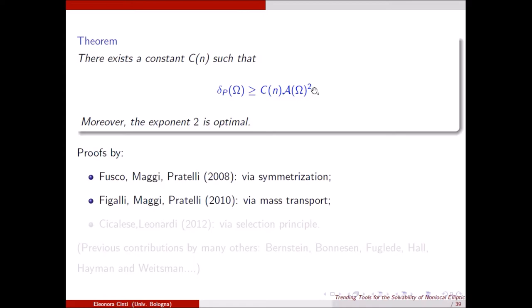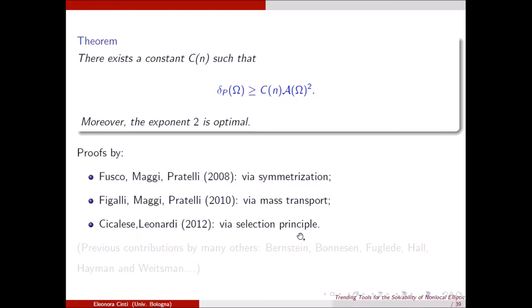Later, Figalli, Maggi, and Pratelli gave an alternative proof using mass transport. In their paper they considered a more general situation with anisotropic perimeter, and since symmetrization techniques are not well-suited to that setting, mass transport theory proved very powerful, yielding the inequality also in the anisotropic setting again with the optimal exponent 2. Another completely different proof was given by Cicalese and Leonardi, based on what they call the selection principle, which uses regularity theory for quasi-minimizers of the perimeter and is quite flexible, applicable to other settings beyond the isoperimetric one.